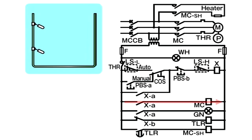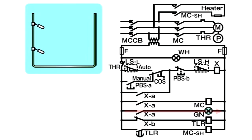When X-A is turned on, the coil of MC is excited. As MC's coil is excited, MC's contactor is turned on. Current is passed to the motor through MCC-B, MC, and THR, and the motor starts. Then the pump starts operating to supply the tank with fuel oil. As X-A is turned on, the green operation lamp illuminates.